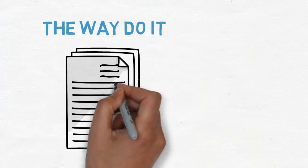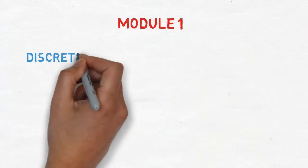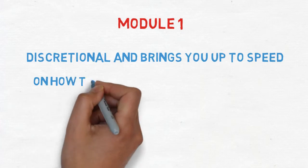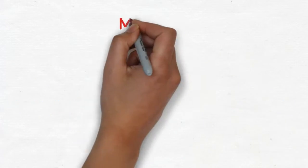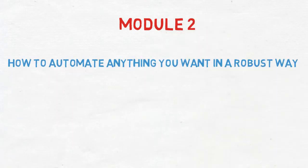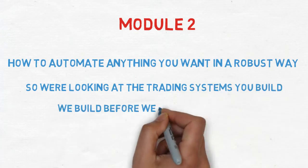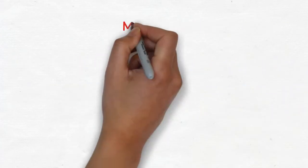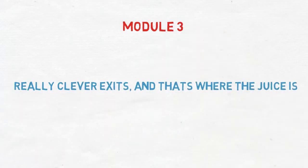So the way we do it is we have a curriculum made up of three modules. Module one is discretional and brings you up to speed on how to build a trading plan on what we believe are significant elements of the market. Module two is how to automate everything you want in a robust way. So we're looking at trading systems you build and we build before we let you use it live. And then module three is about really clever exits and that's where the juice is.